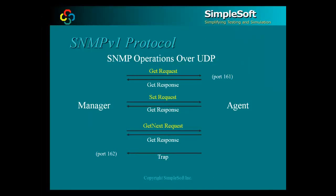Managed objects defined in the MIB are kept in a lexicographically sorted manner in the agent. Lexicographically sorted means sorted as in a dictionary. The main operations are: get, which is used to retrieve the value of a given manageable object; set, which is used to change the value of a given manageable object; get-next, which is used to get the value of the lexicographically next variable and is useful when traversing tables or manageable objects whose instance components are not known beforehand; and trap, which is sent by the device to alert the manager about an anomaly.